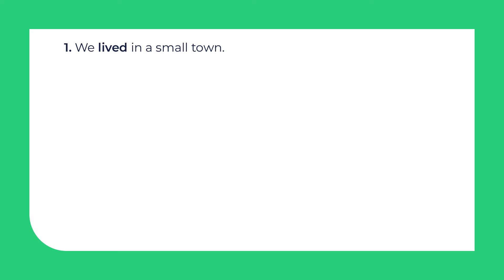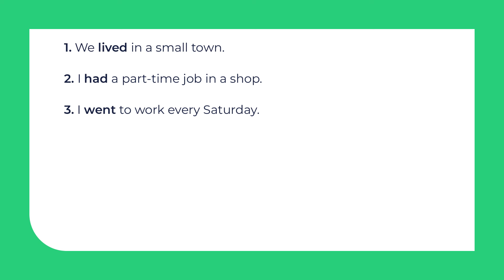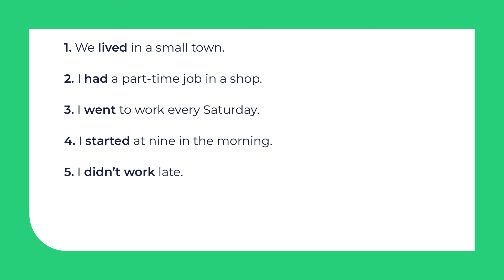Now you are ready for another task. Take a look at these sentences. Write the verb in bold with WOULD if possible, or with USED TO. 1. We lived in a small town. 2. I had a part-time job in a shop. 3. I went to work every Saturday. 4. I started at 9 in the morning. 5. I didn't work late. 6. I didn't like my job, so I decided to leave.